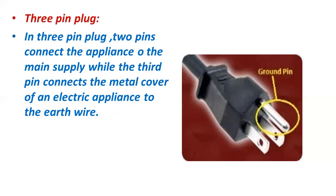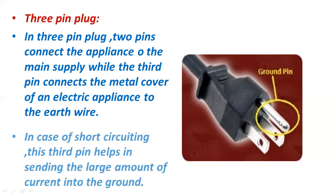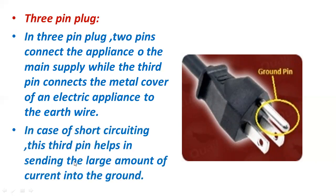In a 3-pin plug, two pins connect the appliance to the main supply, while the third pin connects the metal cover of the electric appliance to the earth wire. This third pin is also called the ground pin. In case of a short circuit, this third pin helps send the large amount of current into the ground, passing the extra current to the ground wire and preventing short circuiting.